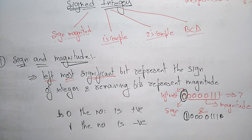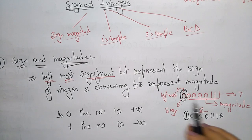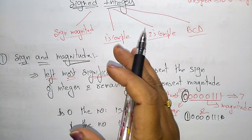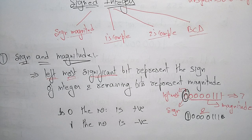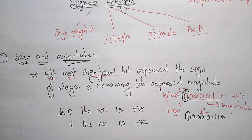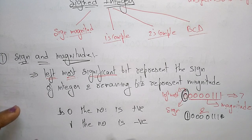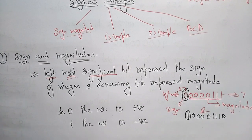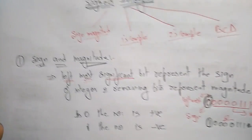The remaining bits represent the magnitude. This is the simplest form for humans to understand. When you see a binary number, if the leftmost bit is 1, the number is negative; if it is 0, the number is positive. However, sign and magnitude is somewhat costly to implement.